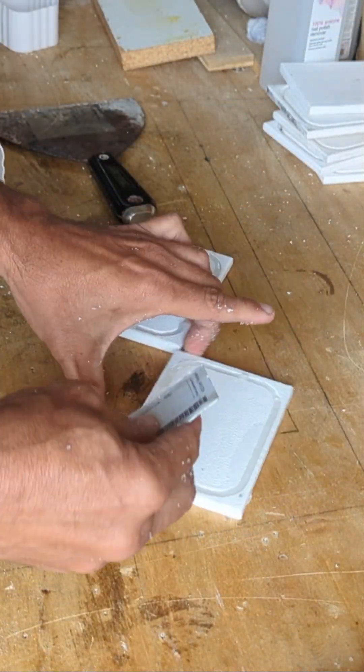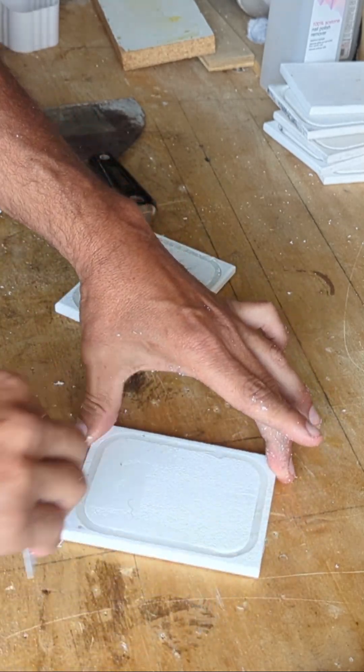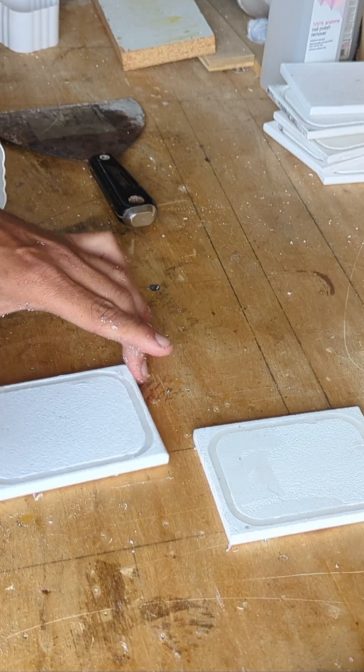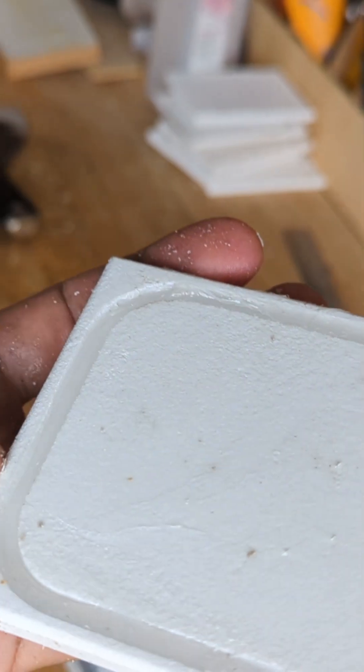When the groove looks evenly filled, use a putty knife or something similar to scrape up any excess silicone and fill in any low spots you may have noticed. As the silicone takes around 20 minutes to begin curing, there is no need to rush.